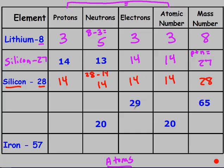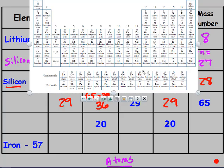For the next row with 29 electrons, that means 29 protons and atomic number 29. Neutrons = 65 minus 29 = 36 neutrons. Looking on the periodic table, atomic number 29 is copper, so this is copper-65.